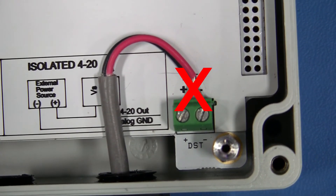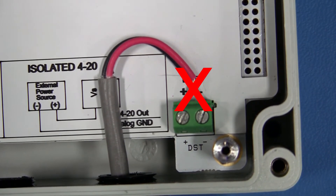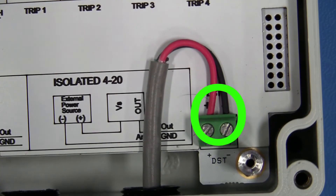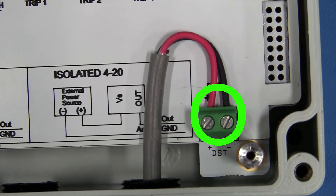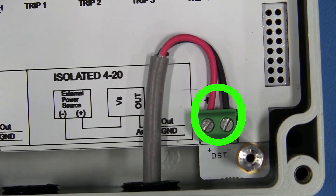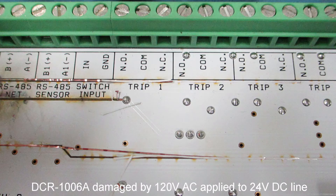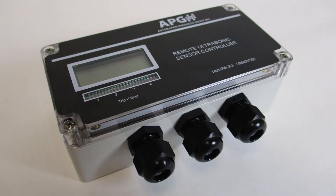Use caution when installing wires. Ensure all wire strands are twisted and properly installed in the connector. Strip wire ends so that the insulation covers the wires as close to the connector as possible without being pinched. To prevent damage, ensure your power supply is compatible and wiring of the DCR and all components is correct before applying power. See DCR-1006A instructional video number 1 for a guide to powering your DCR-1006A.